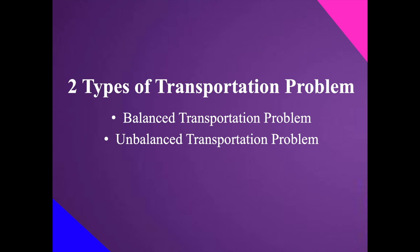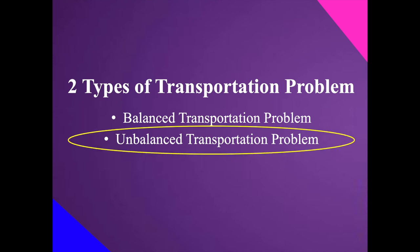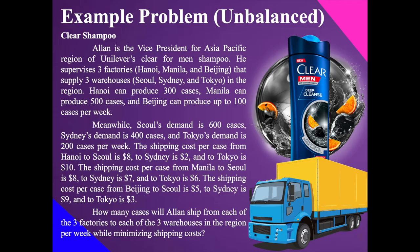We have two types of transportation problems: balanced and unbalanced. In this presentation, we will be dealing with the unbalanced transportation problem, and the method of computation is the Northwest Corner Rule. Let's start with our example.